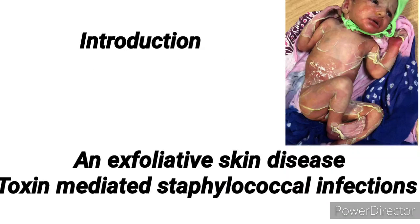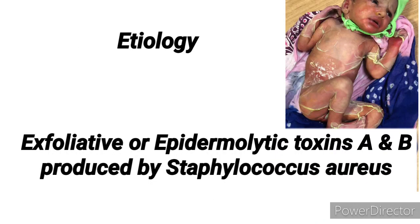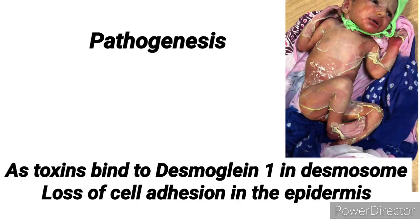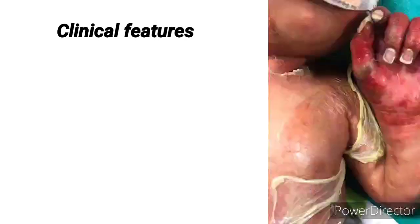It is an exfoliative skin disease — a toxin-mediated staphylococcal infection caused by exfoliative epidermolytic toxin A and B, which is produced by Staphylococcus aureus. In pathogenesis, this toxin causes loss of cell adhesion in the superficial layer of the epidermis by acting on the desmosome. The toxin binds to the molecule desmoglein-1 within the desmosome, which breaks up such that the skin cells lose adherence and the patient develops the characteristic clinical features.